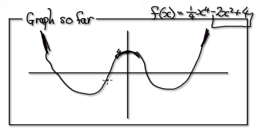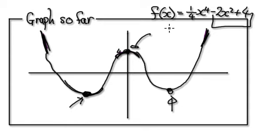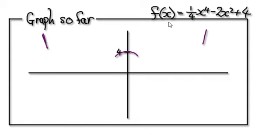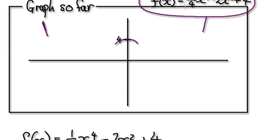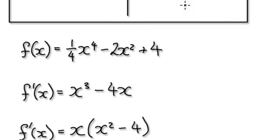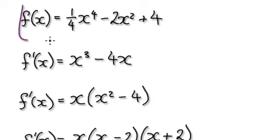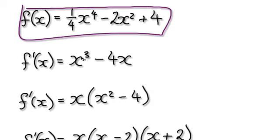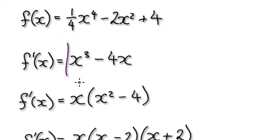Now we need to find out when the gradient will be 0. The gradient here will be 0, the gradient here will be 0, and the gradient here will be 0. So to find the gradient, we need to differentiate this. Starting with our function here, we differentiate it — it will give us this.